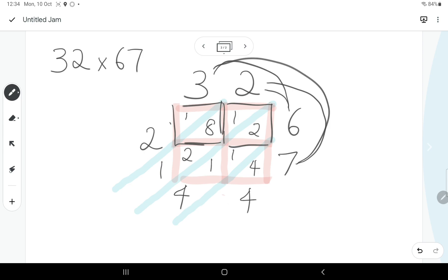Then we need to read the number. The way that we read the number is by going around. So the number is actually 2,144.